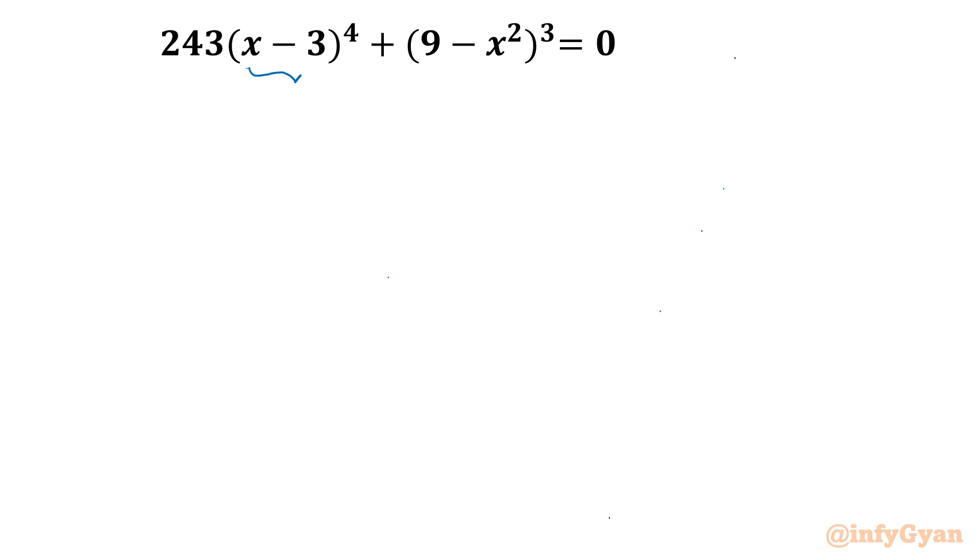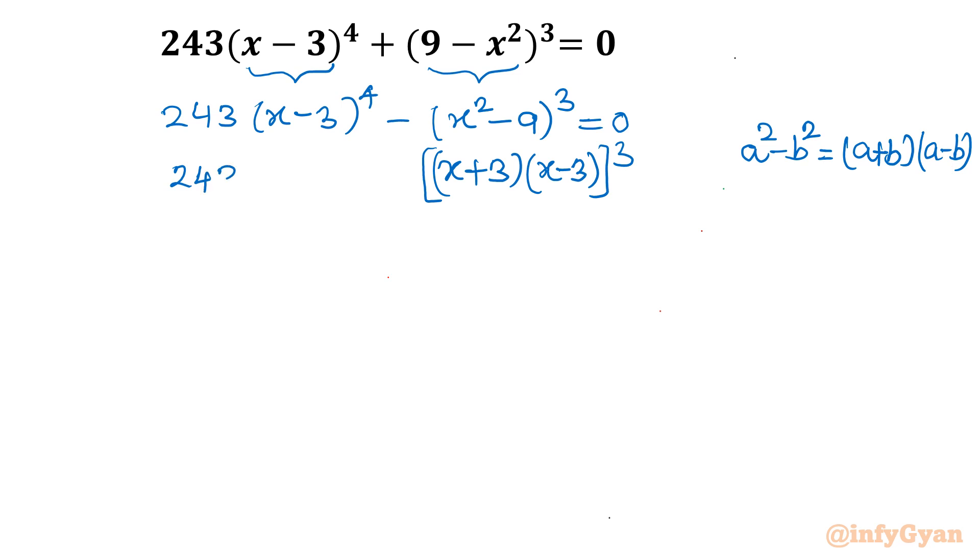As you can see here we are having x minus 3 and 9 minus x squared. So it is somewhere related to x minus 3 also. First I will take minus outside. So I will write this equation as 243(x-3)⁴ minus x² minus 9 whole cube. Now I will use the algebraic identity a² minus b² equals (a+b)(a-b). So here I can write (x+3)(x-3) whole cube.